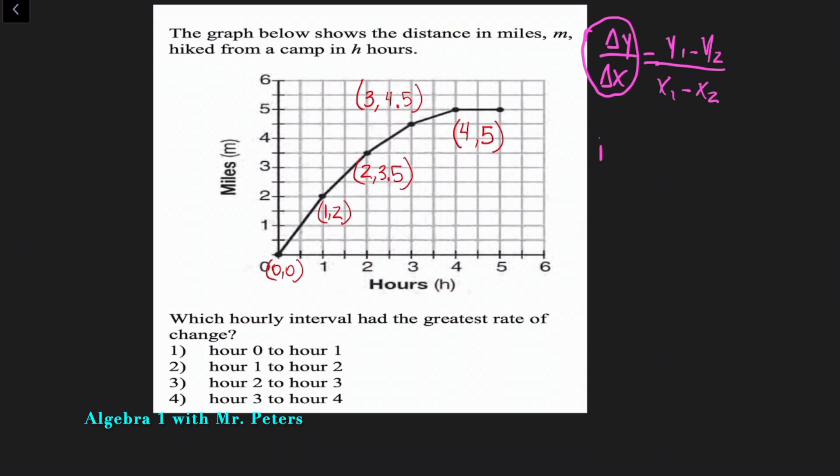Now, for us to solve, we have to calculate each of these average rate of changes. Typically, students get a problem like this wrong because they want to eyeball the graph and basically make a best educated guess. And that doesn't always work. So when we look at the first zero to hour one, we have two minus zero over one minus zero, which just gives us two over one, which is the same as two.